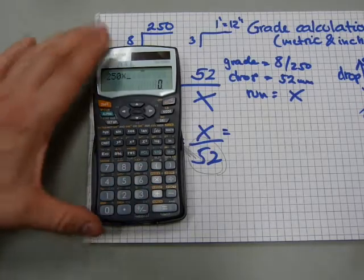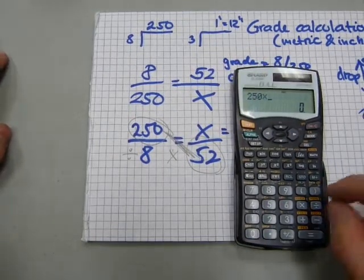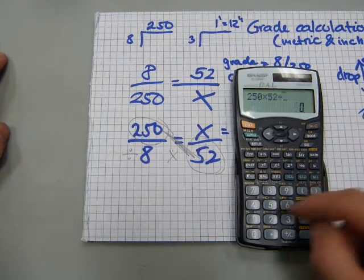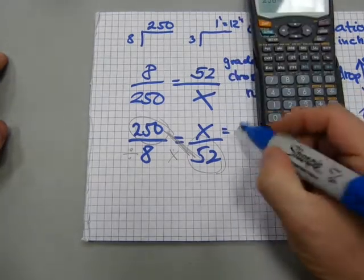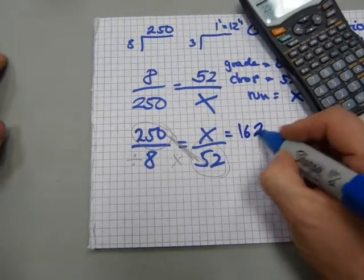250 times 52, and then let's divide it by 8 because the calculator can do it all. 1625.